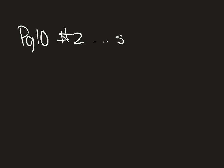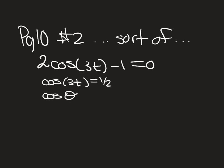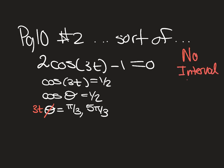Now, piggybacking off that problem: what if there's no interval? For 2cos(3t) = 1 with no interval, you write cosine of theta equals one-half, giving theta at π/3 and 5π/3. But since there's no interval, you must account for all circles in both directions — going around and around infinitely.